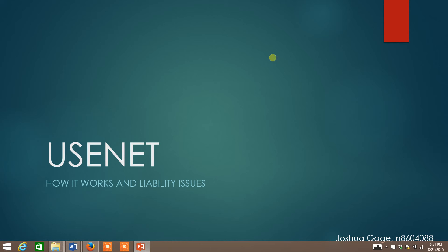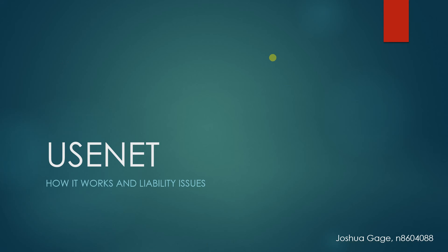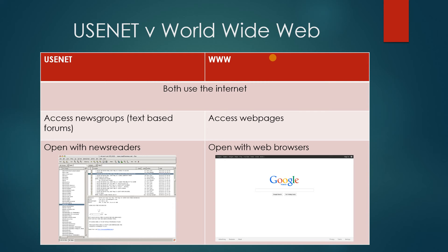Usenet is an early internet network and in some ways was the precursor to the World Wide Web, the most common way we use the internet today. An abbreviation of Usenet, it was one of the first systems to advance the popularity of the internet due to its suitability for personal use. As opposed to the World Wide Web's web pages, Usenet accesses newsgroups.